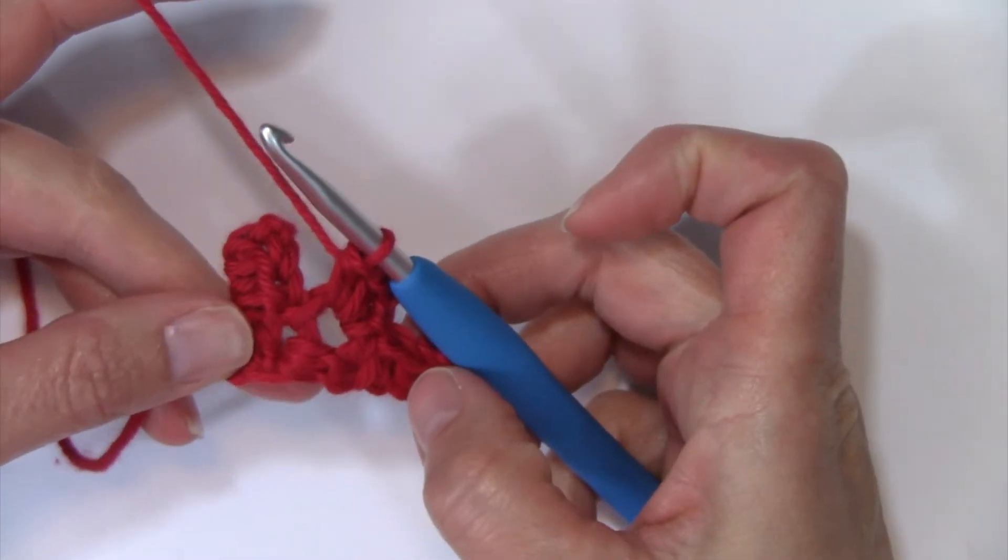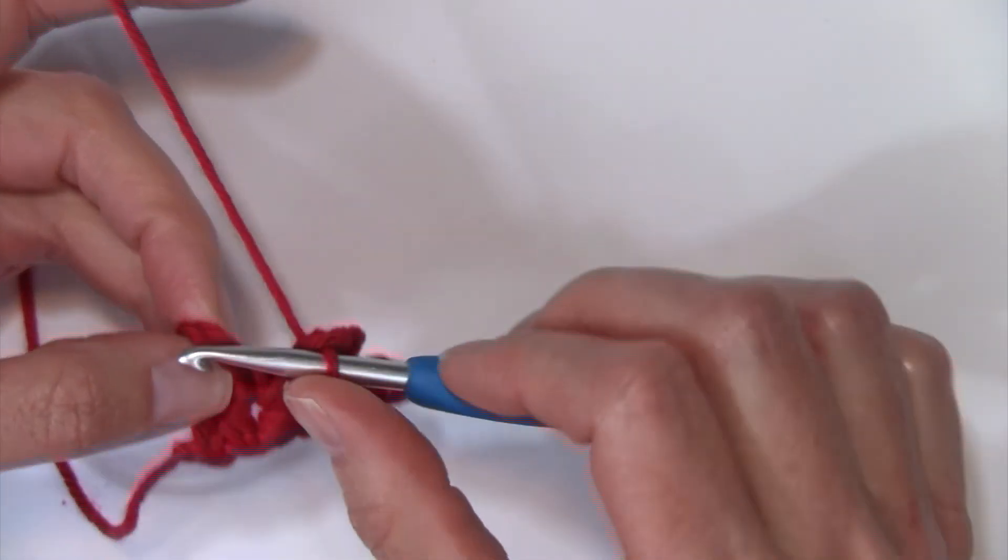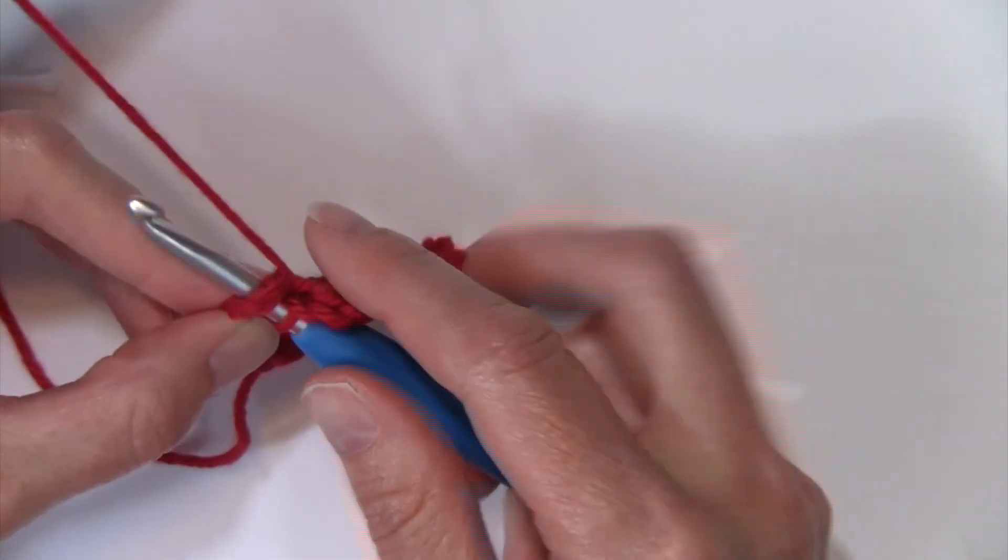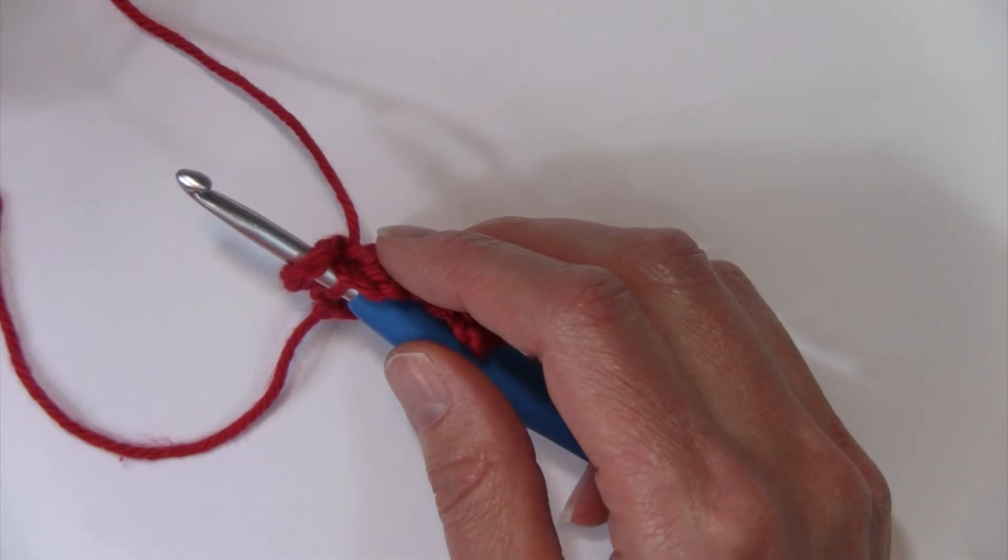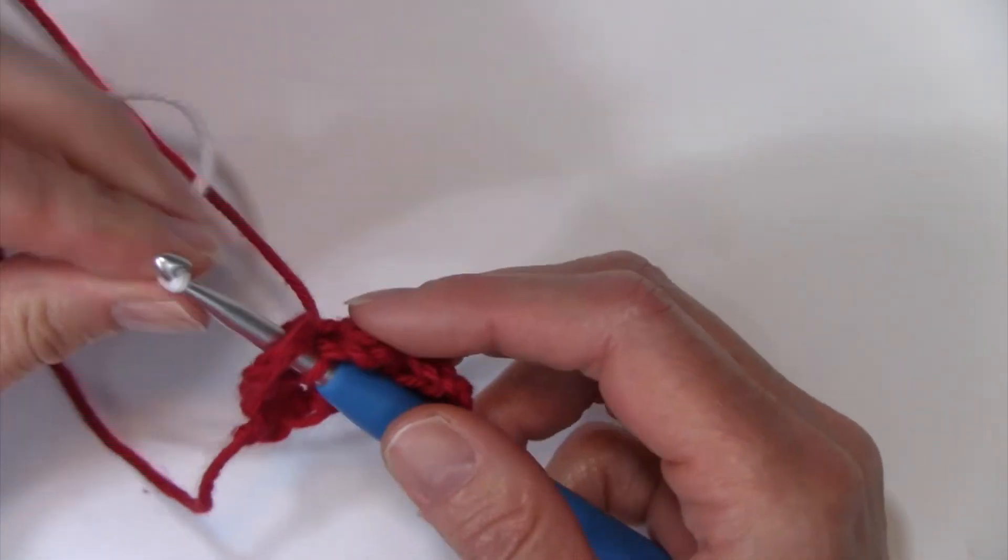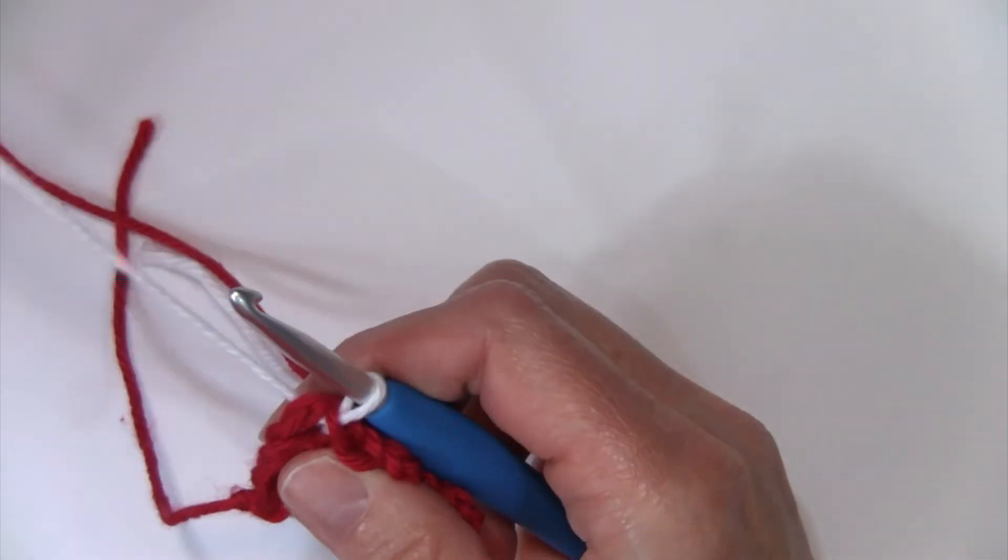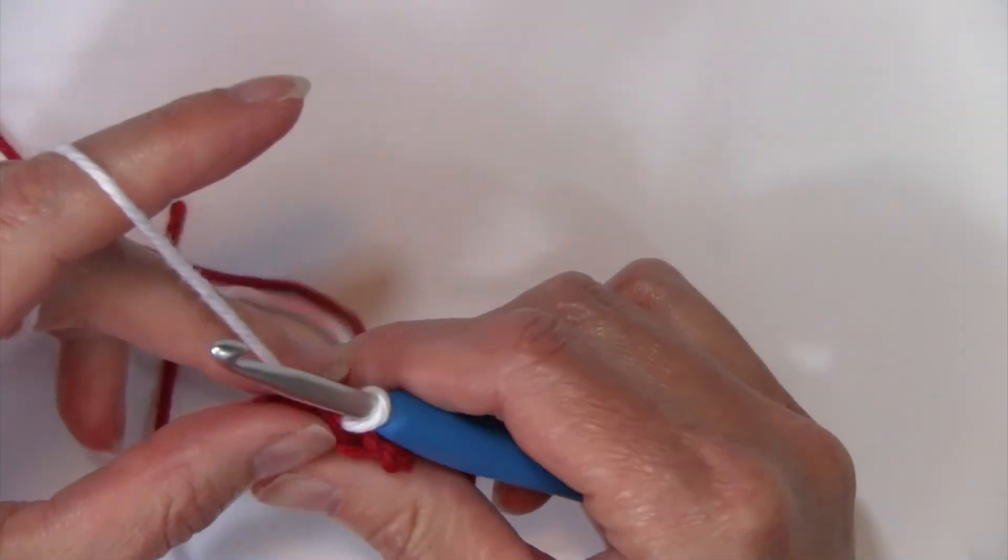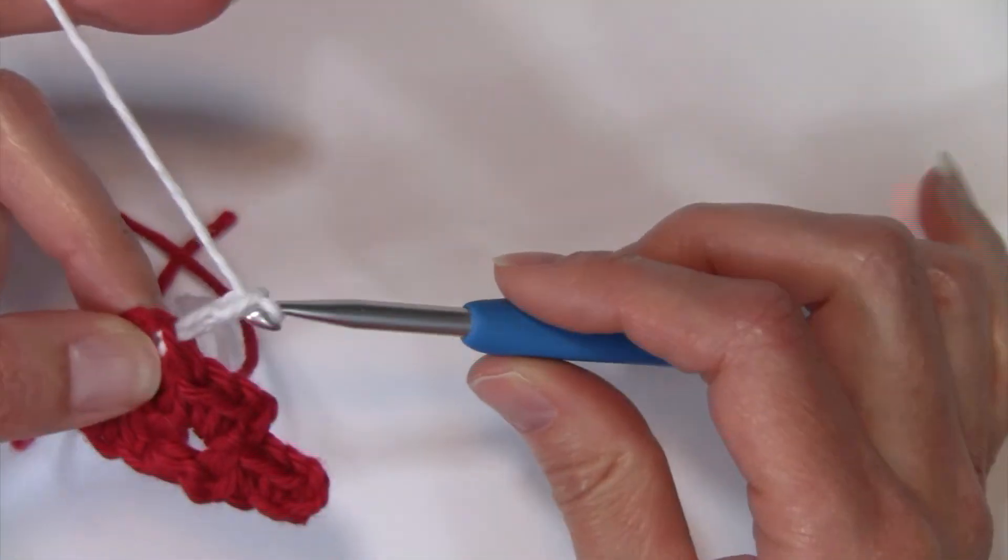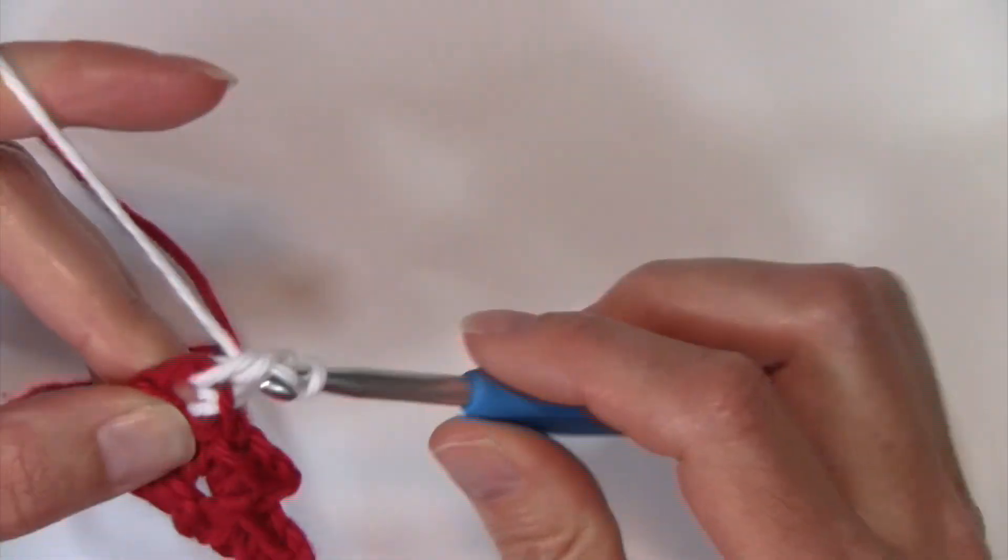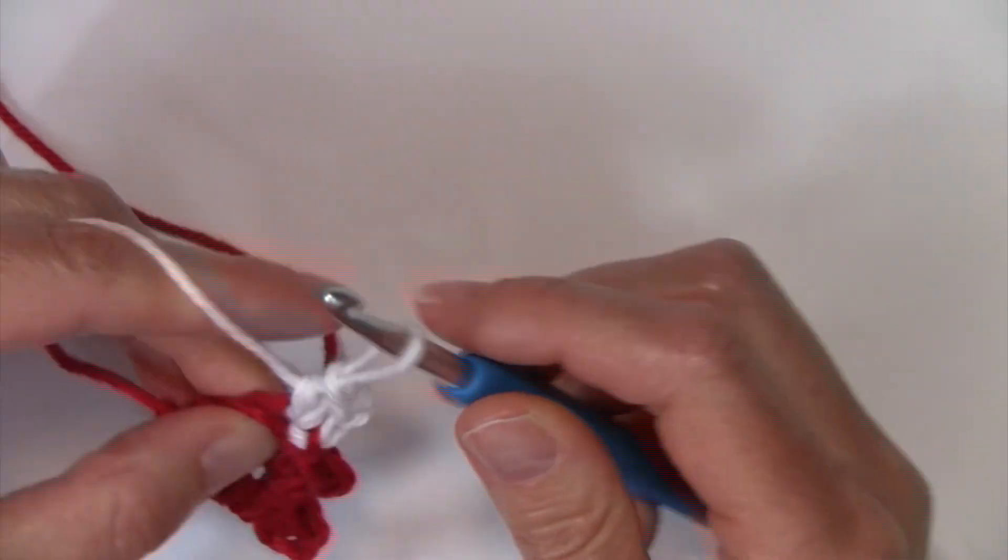If you are making the American flag, this is where I would go ahead and change colors to white by dropping my red and bringing in my white color with my slip stitch. And again, you can watch my videos about tips and tricks for changing colors and carrying yarn and all of that. We're going to chain two and then work two half double crochets in that same space.